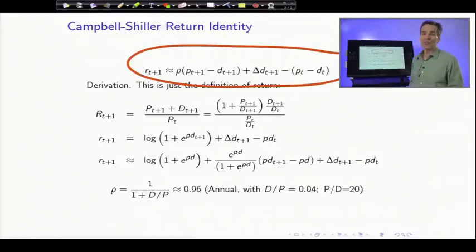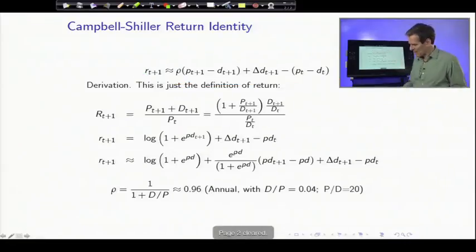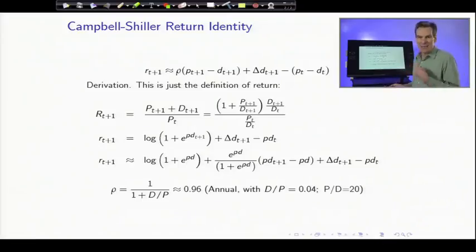That'll be useful in many different places, as well as in deriving the present value identity. So that's the first formula you need to remember. Next formula, let's turn that into a present value identity the same way we did in one period model.